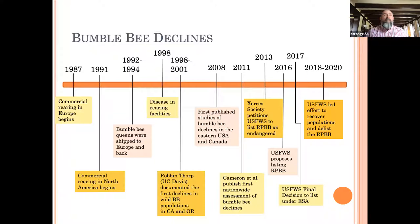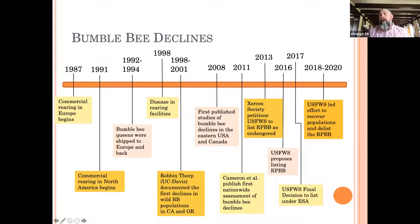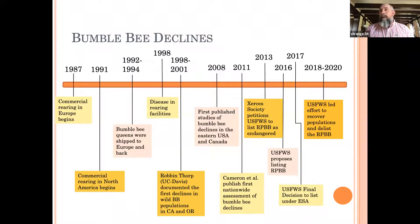Anyone who thinks getting a species listed under the Endangered Species Act is easy is mistaken — it took a lot of work and many people a lot of time to build a strong case. In 2017 the US Fish and Wildlife Service came up with their final decision to list the species. It gets advertised in the Federal Register, is open for public comment, and then gets an up-or-down vote by the executive branch. It was a long process requiring a lot of accumulated data and information to reach that point.